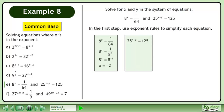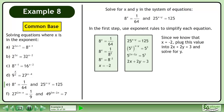Now rewrite the second equation. 25 equals 5 squared and 125 equals 5 cubed. Multiply the exponents. Set the exponents equal to each other. Since we know that x equals negative 2, plug this value into 2x plus 2y equals 3 and solve for y.